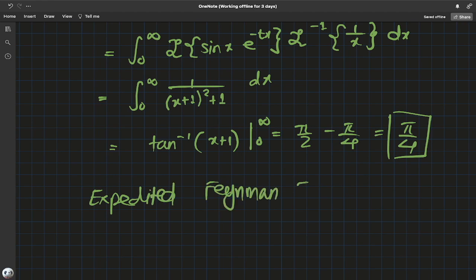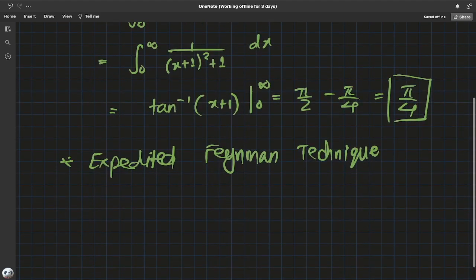So you see how the Laplace transform technique is sort of like an expedited Feynman technique in this case. This may not hold true for all cases. When the Feynman technique fails, Laplace transform can help, and Laplace transform fails when technique helps. So this point may not be true every time, but it's just a beautiful observation here with this question.